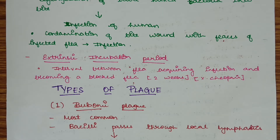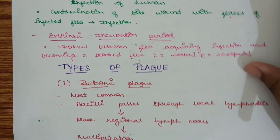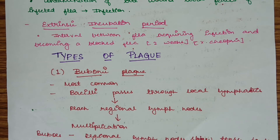That is known as a blocked flea. Generally the extrinsic incubation period is two weeks for Xenopsylla cheopis. There are three types of plague: bubonic plague, pneumonic plague, and septicemic plague.